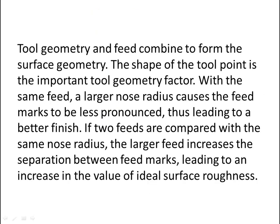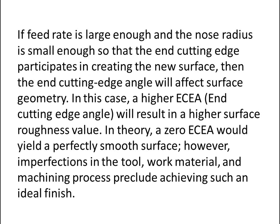Tool geometry and feed combine to form the surface geometry. The shape of the tool point is the important tool geometry factor. With the same feed, a larger nose radius causes the feed marks to be less pronounced, thus leading to a better finish. If two feeds are compared with the same nose radius, the larger feed increases the separation between feed marks, leading to an increase in the value of ideal surface roughness. If the feed rate is large enough and the nose radius is small enough so that the end cutting edge participates in creating the new surface, then the end cutting edge angle will affect surface geometry. In this case, a higher end cutting edge angle will result in higher surface roughness values.